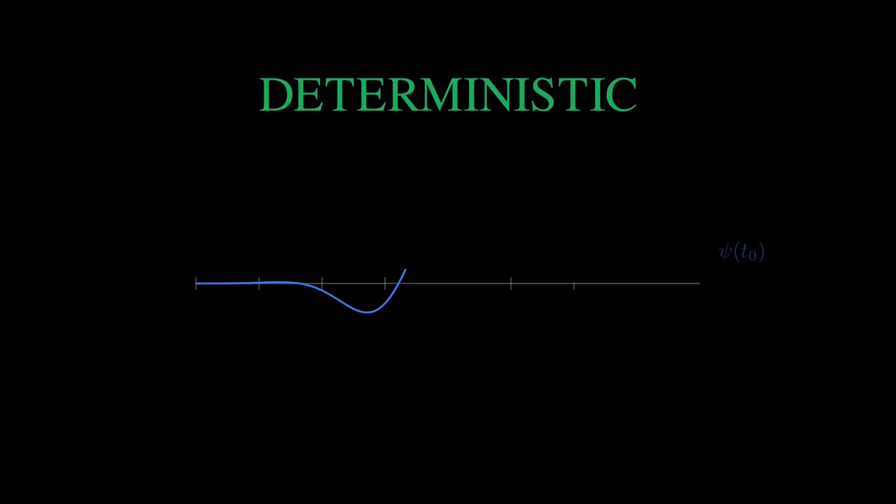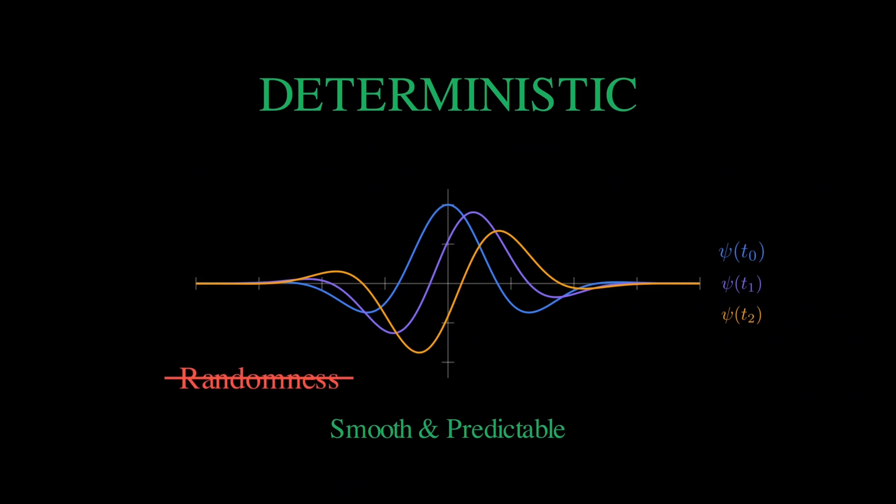Now here's something that surprises many people. The Schrödinger equation is completely deterministic. Given the wave function at any moment, you can predict with absolute certainty what it will be at any future time. The wave function evolves smoothly and predictably, like a classical wave. There's no randomness in this evolution. But here's the twist that makes quantum mechanics so strange.